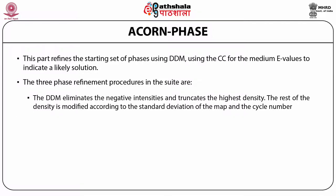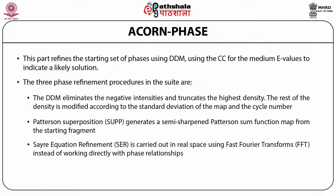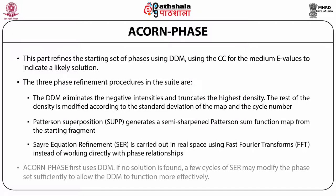Patterson superposition generates a semi-sharpened Patterson sum function map from the starting fragment. Then Sayre equation refinement is carried out in real space using FFT instead of working directly with the phase relationships. ACON phase first uses DDM. If no solution is found, a few cycles of Sayre equation refinement may modify the phases sufficiently to allow DDM to function more effectively — we observe this in most of the trial cases done by us.